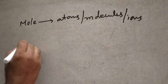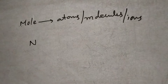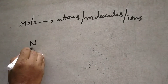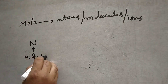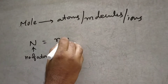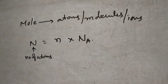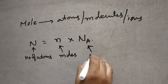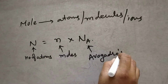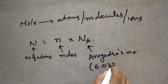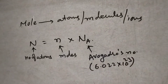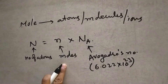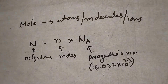So generally, number of particles is nothing but — suppose you want to convert into number of particles — number of atoms is equal to N into Nₐ or N₀. N is the number of moles, and Nₐ is Avogadro's number: 6.022 into 10 to the power of 23. To calculate the number of atoms, you multiply the number of moles by Avogadro's number.